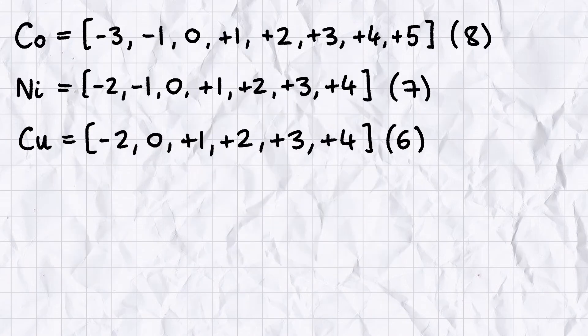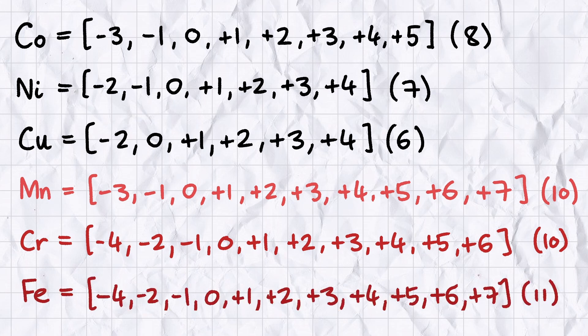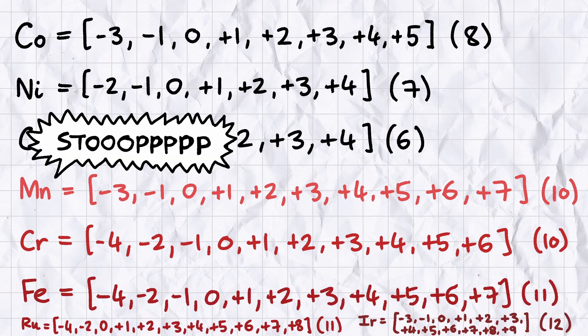All of the transition metals have wide ranges of oxidation states, but manganese has 10, the most of any element on the periodic table. At least I thought it was before I read the Wikipedia article for chromium, and iron, and ruthenium, and iridium, and how many elements are there on this thing?